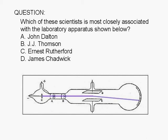Which of these scientists is most closely associated with the laboratory apparatus shown below? A. John Dalton, B. J.J. Thomson, C. Ernest Rutherford, or D. James Chadwick.